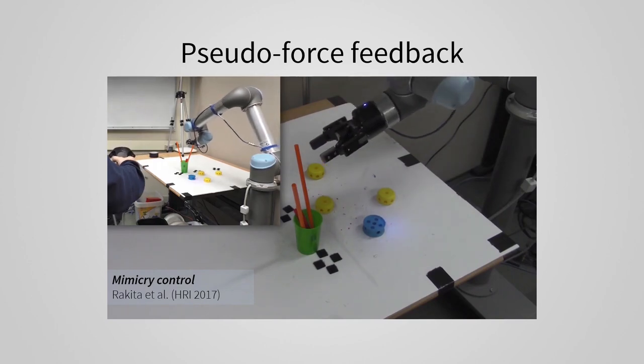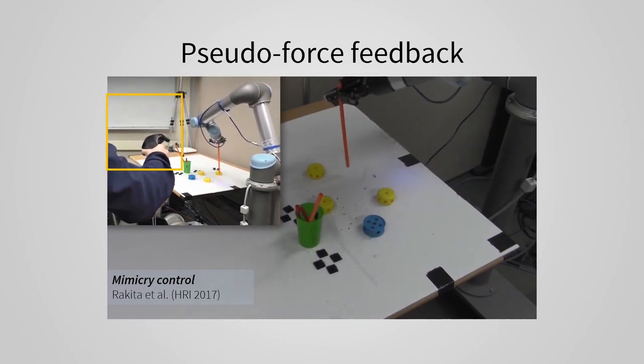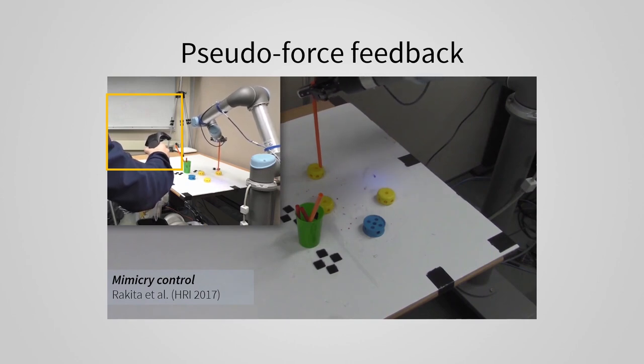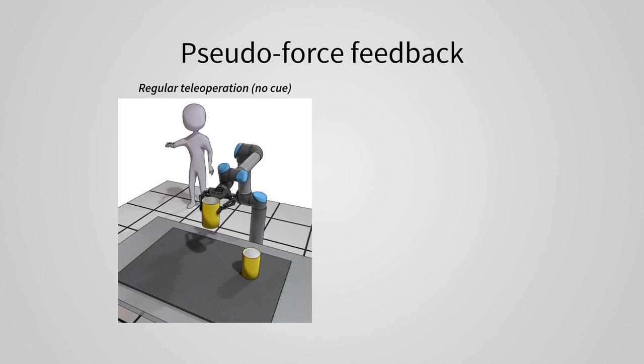Our work uses an implementation of teleoperation called mimicry control. The user's hand movement is tracked in real-time, and the robot mimics their movement. During regular teleoperation, the user can control the robot by moving their arm. The robot closely follows the user's motion.